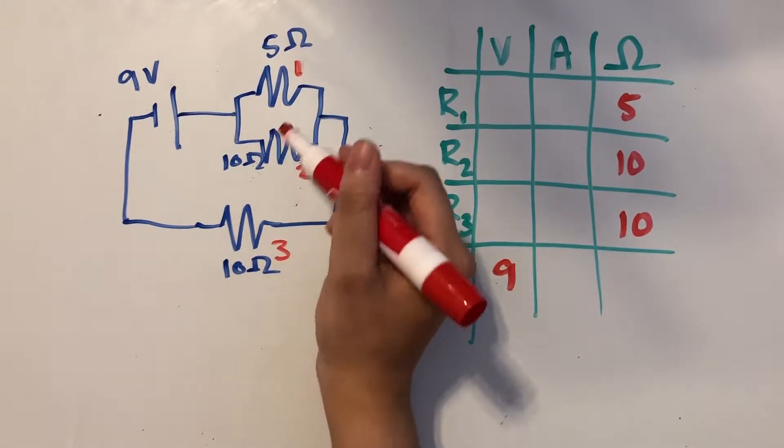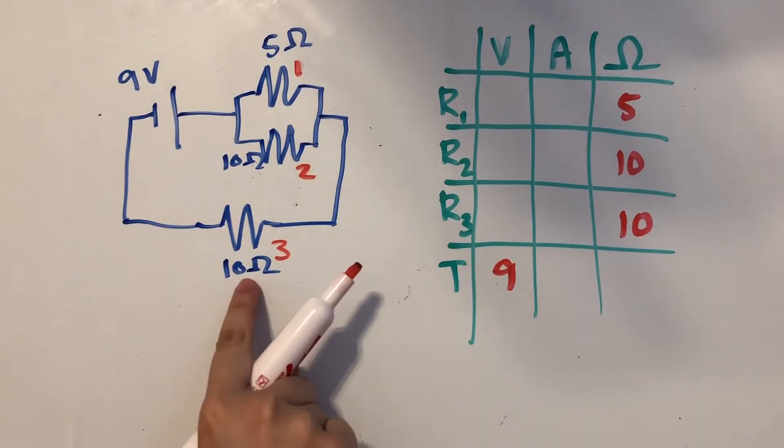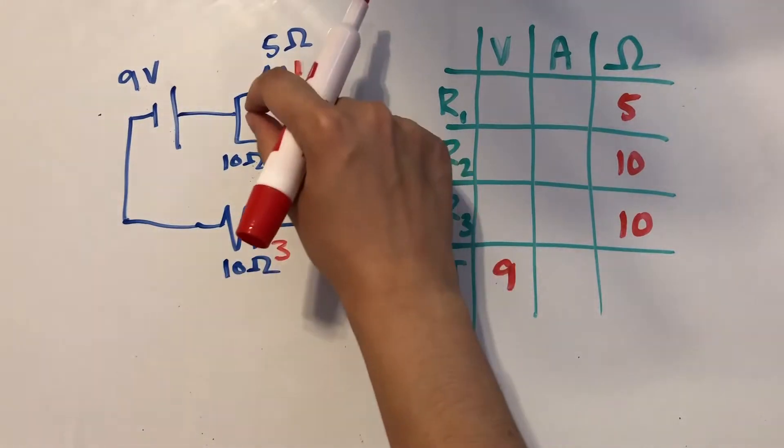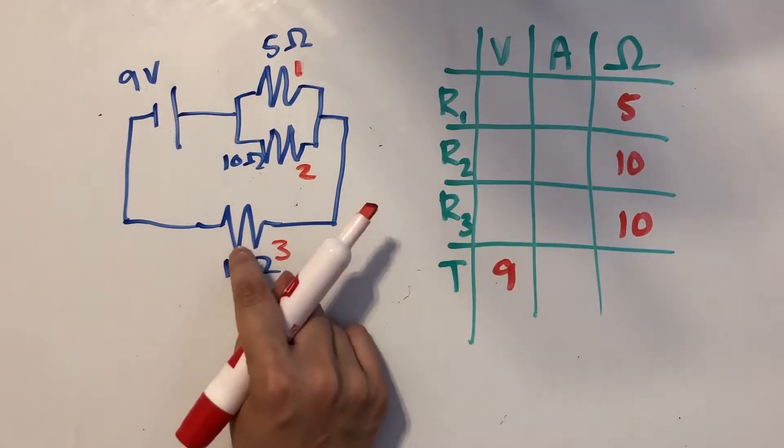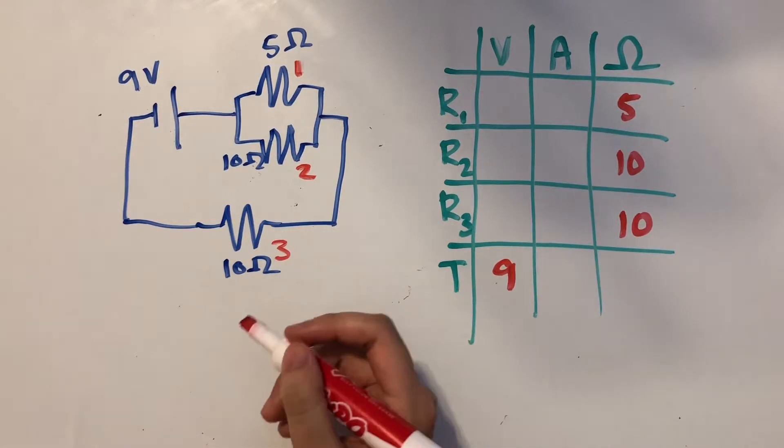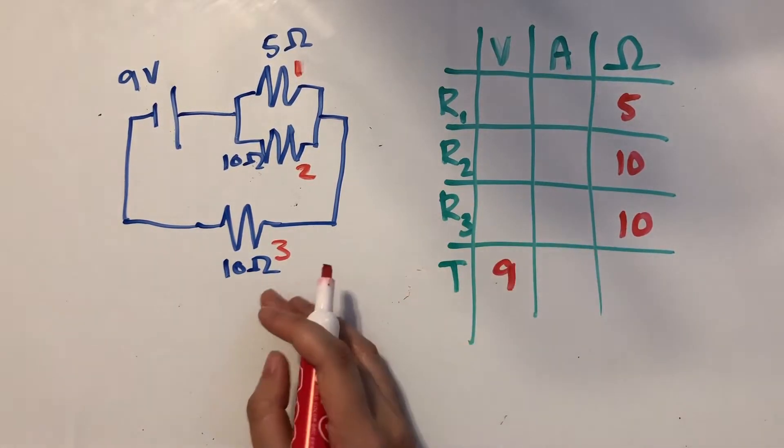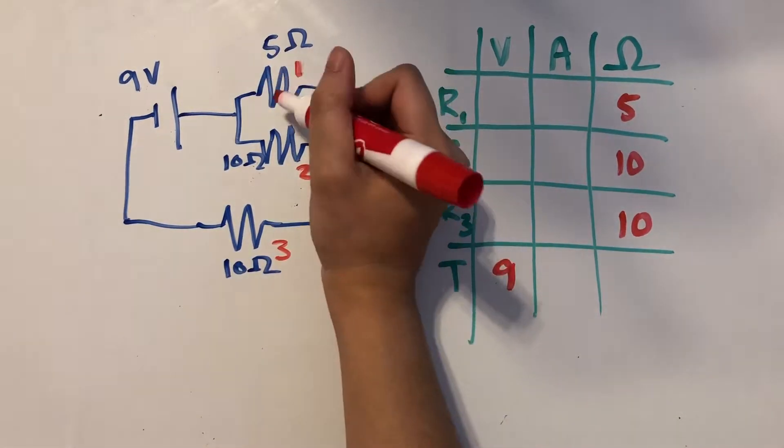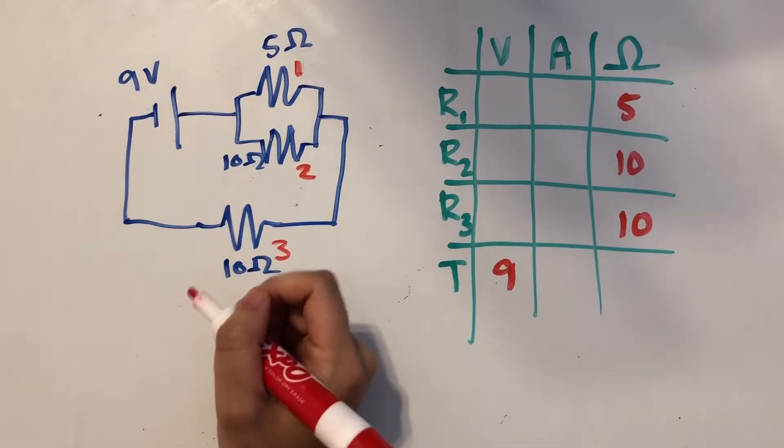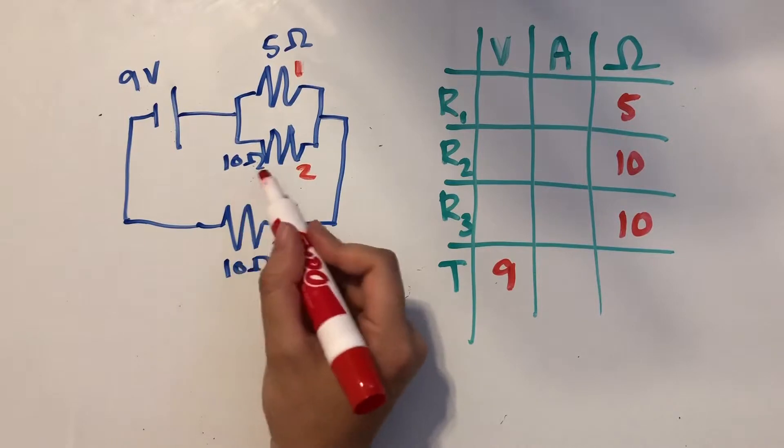Then I would add that to the resistance of this resistor, since the equivalent resistor here would then be in series with this resistor. And remember that adding resistances gives you the total resistance for resistors in series. So looking back at these two resistors, we have one that's 5 ohms and one that's 10 ohms.